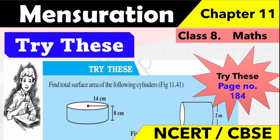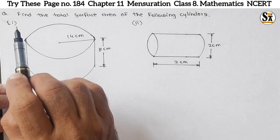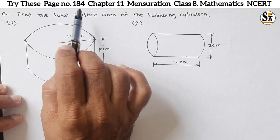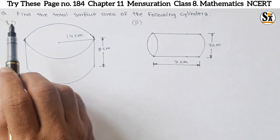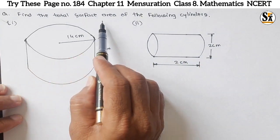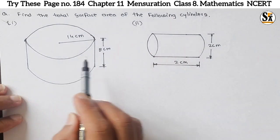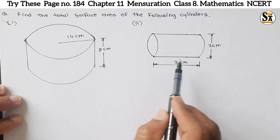So let's start our video and see how to calculate surface area of any cylinder. The question is: find the total surface area of the following cylinders. Two cylinders are given, first cylinder and second cylinder.